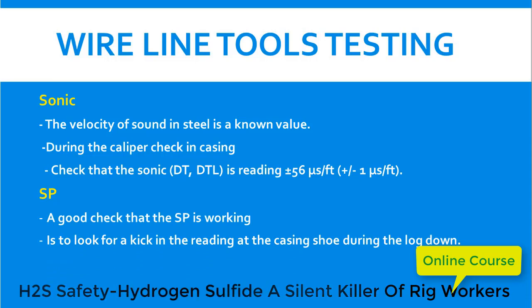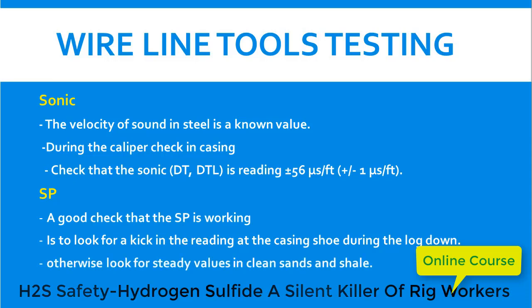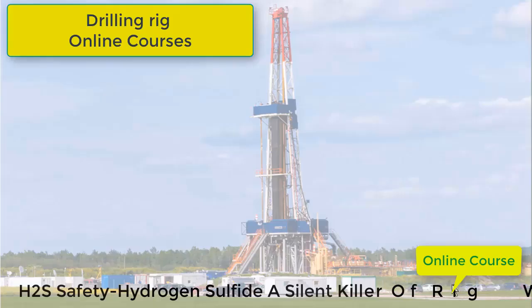For the SP log, a good check that the SP is working is to look for a kick or change in the trend of the reading at the casing shoe during the log run. Otherwise, look for steady values in clean sands and shales.